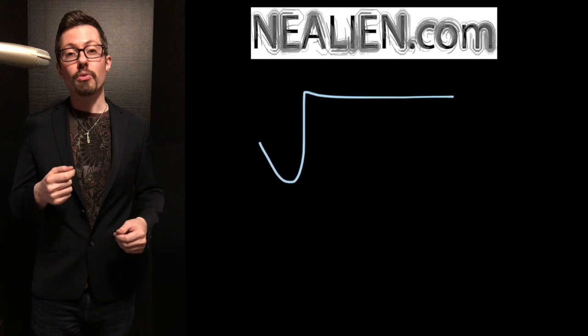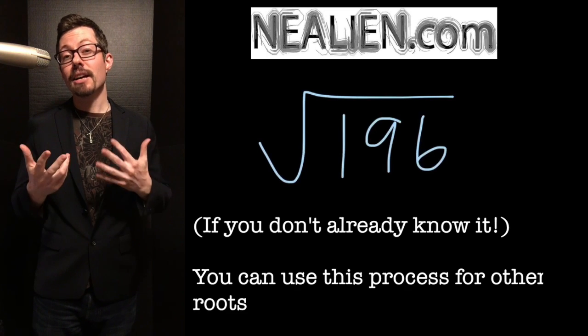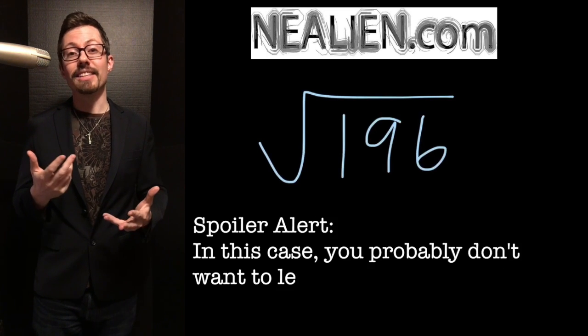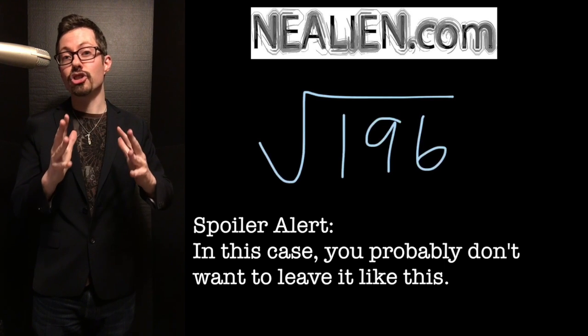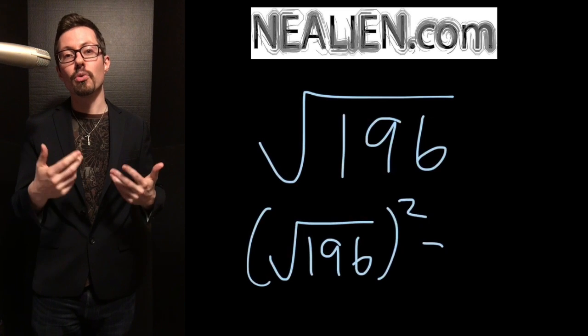To solve the square root of 196, sometimes it's actually more useful to leave it written as the square root of 196. If you're gonna square that, it becomes 196 and it's easy to deal with.